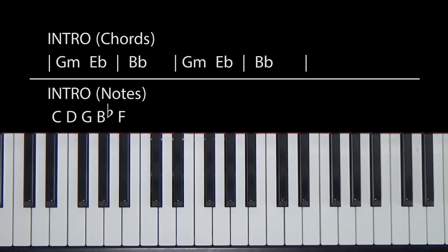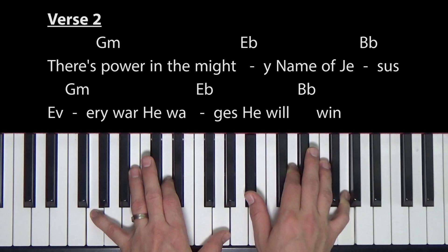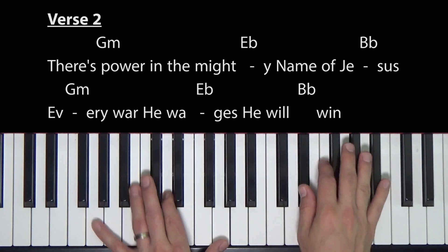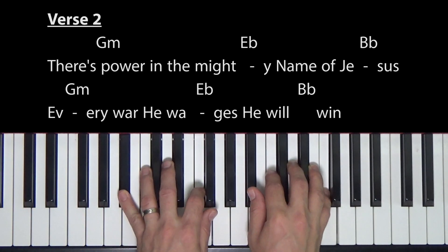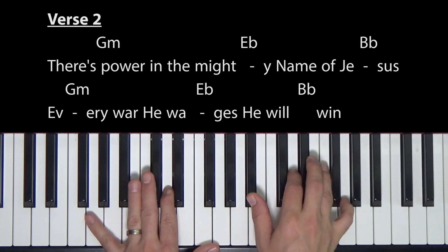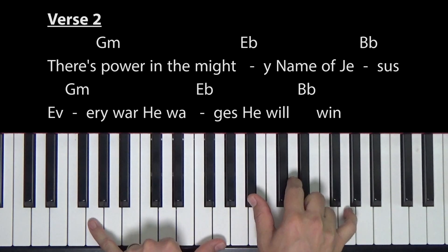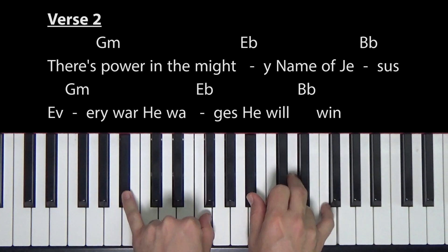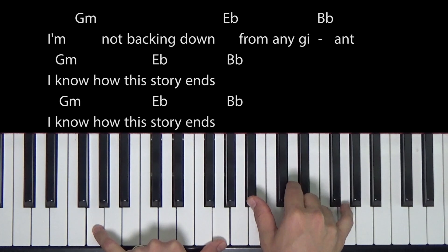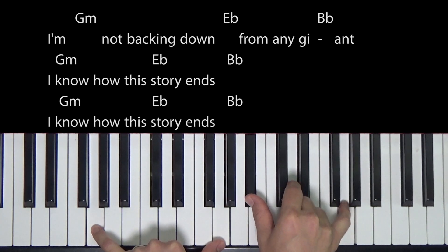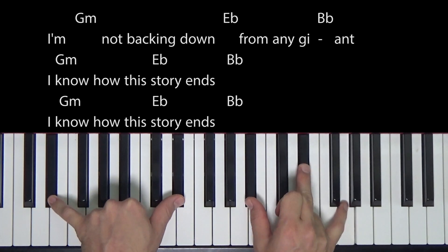Verse two. Let's go ahead and sing. I'll just sing. I'll just go straight through it so we can get to that kind of instrumental part and then into the bridge. So after you play through the turnaround, you can call it intro again, whatever you want to do. Do, do, do, do. Two, three, four. There's power in the mighty name of Jesus. Every war he wages, he will win. I'm not backing down from any giant. I know this. I know how this story ends.